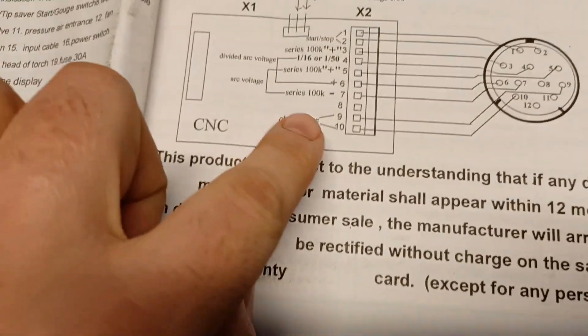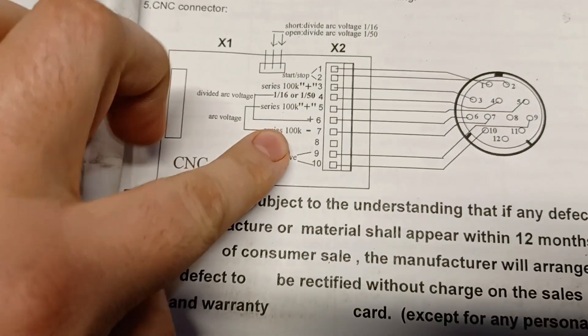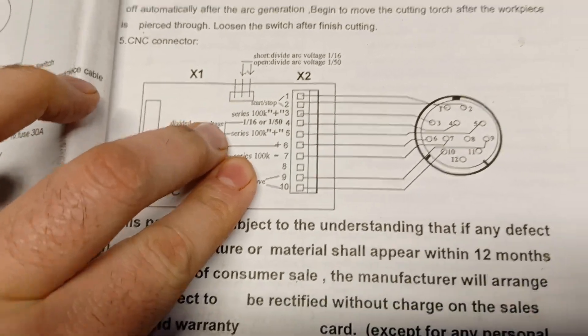Now, it tells you, you know, positive and negative. It says pin 7 is the negative, and pin 5 is a positive.